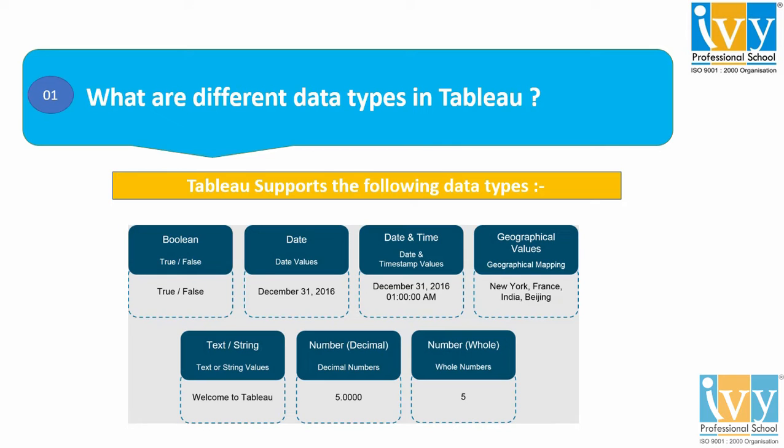Then comes your Date data type, and under the Date data type we have date values — say for example January 1, 2021 or any other date comes under this data type. Then comes Date and Time — all the values which have a date as well as a time come under the Date and Time data type.